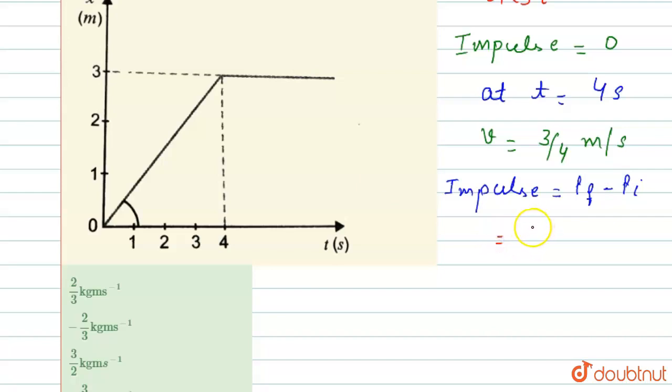And we know that at t equals 4, then after t equals 4, the velocity equals 0 because it is a straight line, it is a constant. So final velocity is equals to 0. So we can write it as m, take m common, v minus u.